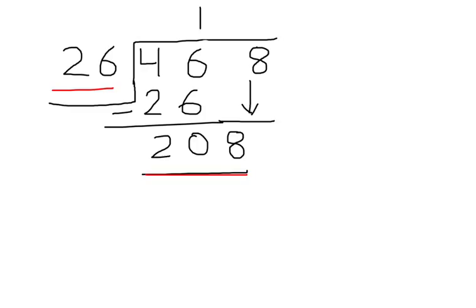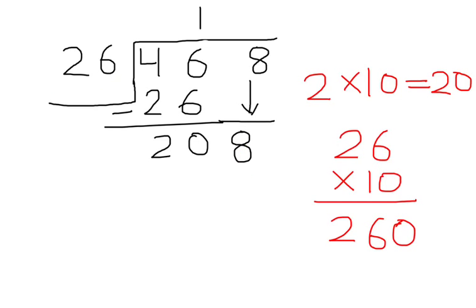Hide 8 and hide 6, we are left with 2 and 20. We know that 2 times 10 equals 20, so let's try 26 multiplied by 10, which gives us 260. But 260 is greater than 208, so let's go back.